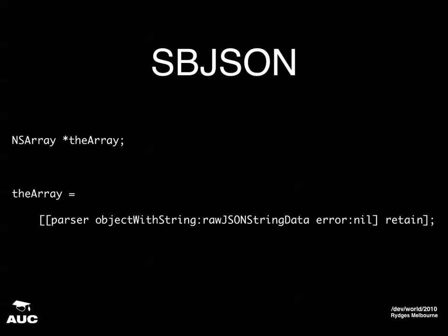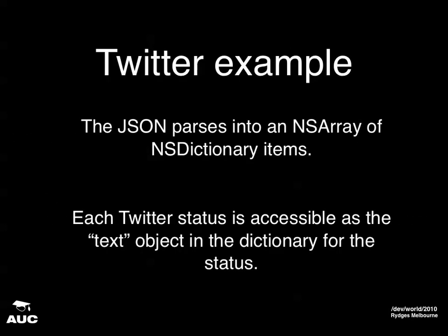You call objectWithString on the JSON parser, give it the string data that you have, and there you go — that gets transformed into your NSArray, which you can use however you like. In this case, it'll be an NSArray full of NSDictionaries.